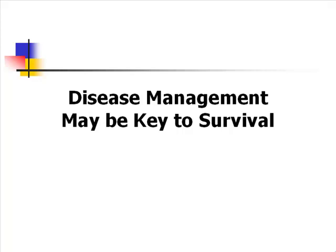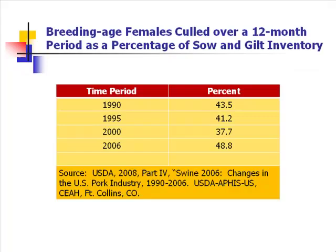Disease management may be the key to survival. Disease management, I think, is management — something we can do to reduce the odds that we may get that disease in our herd. And if we're really top-line types of managers, it may be a competitive advantage we have in the industry. Let's take a look at some of the information coming out of the NAOMS studies.